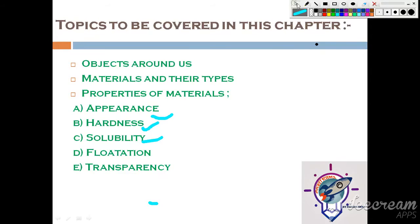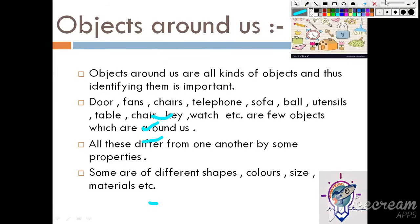Let's start the first topic: objects around us. Objects around us are all kinds of objects and identifying them is important. What are the objects that we see around us? If you look around you on four sides, you will be able to see that there is a huge lot of objects around us.